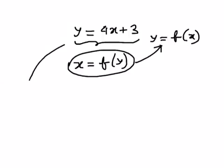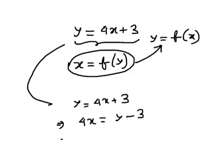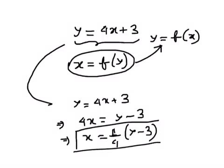So if we just rewrite this one and change the subject, y equals 4x plus 3, we have to make x the subject. So y minus 3, x equals one fourth times y minus 3. So this one is the inverse function of this one.